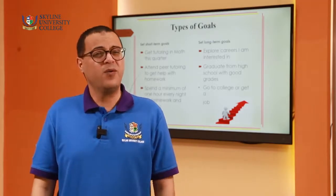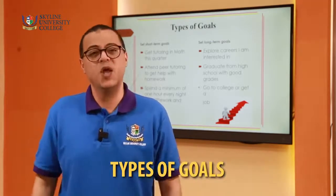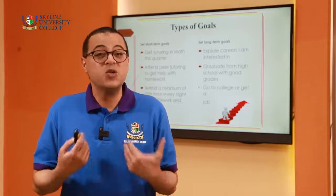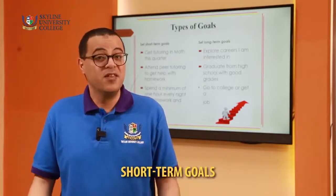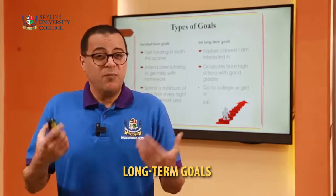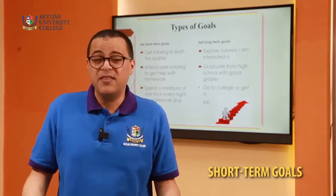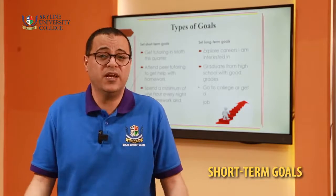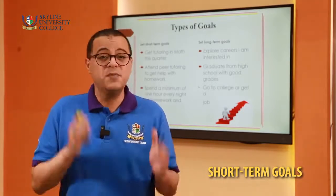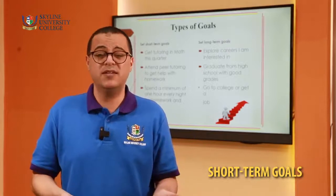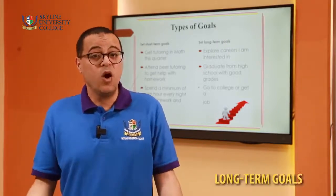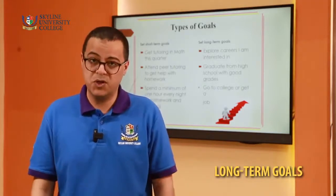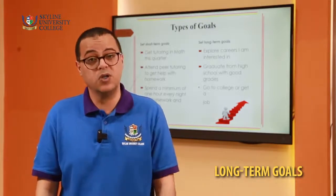Now let's talk about the different types of goals. We have two different types. The first one is a short-term goal and the second one is a long-term goal. For example, get tutoring in math this quarter — that's a short-term goal. Attend peer tutoring to help with homework — that's a short-term goal. Spend a minimum of one hour every night doing homework. On the other hand, long-term goals include exploring careers you're interested in, graduating from college, or finding a job.